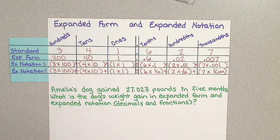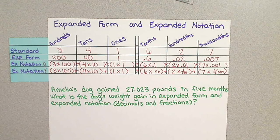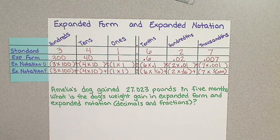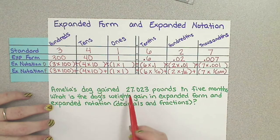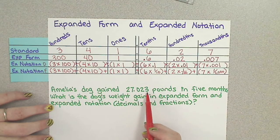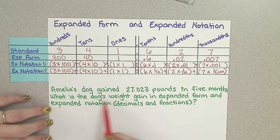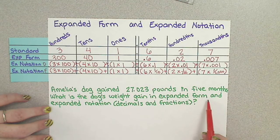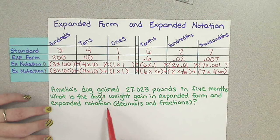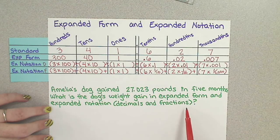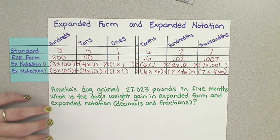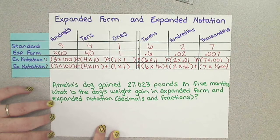Alright, so now let's take a look at this with a real-life example, a potential question that you may come up to. Amelia's dog gained 27 and 23 thousandths pounds in 5 months. What is the dog's weight gain in expanded form and expanded notation, decimals and fractions? I've read it once. Now I'm going to go back and read it again and break down some of this information.